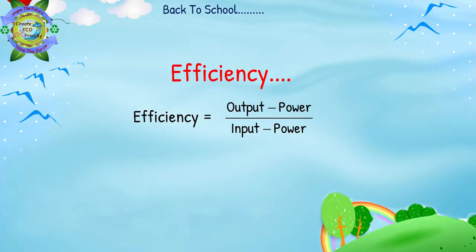Efficiency is output upon input। आपने किसी को 100 रुपए दिए काम करने के लिए और उसने 90 रुपए का काम किया, तो उसकी efficiency होगी 90%, या fraction में 0.9।